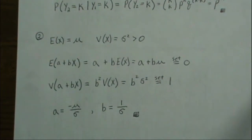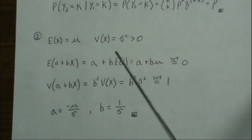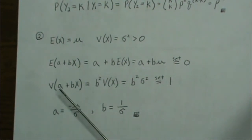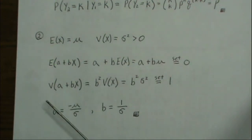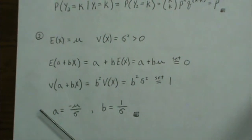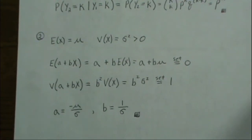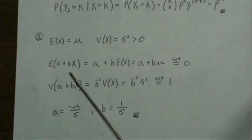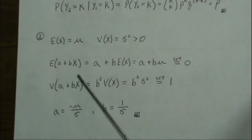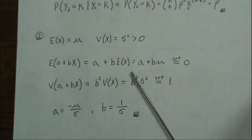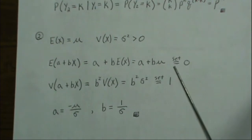Problem number two: we're given that a variable X has a mean of mu and a variance of sigma squared. We're asked to choose A and B such that the mean of A plus BX is zero and the variance of A plus BX is equal to one. The mean of A plus BX is A plus B times the expected value of X, which is mu. So we set that equal to zero.